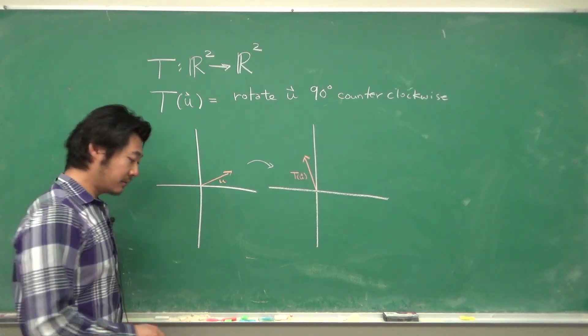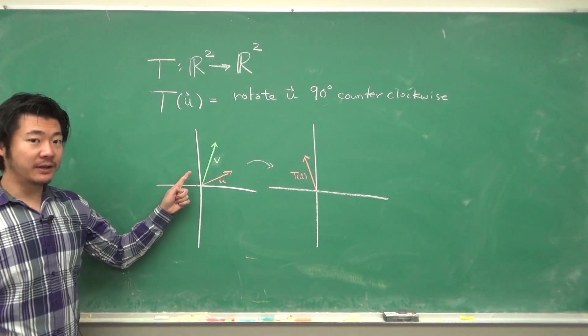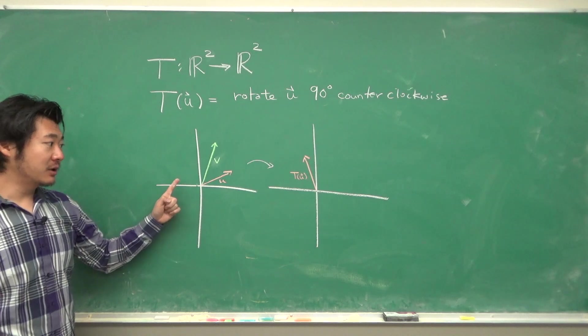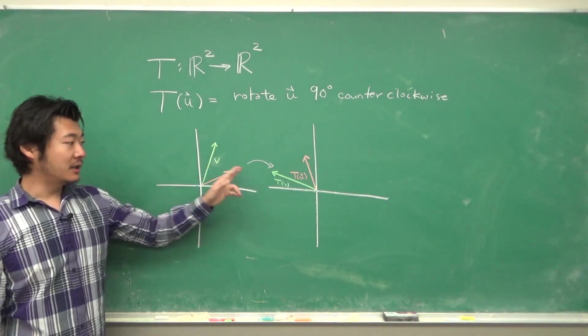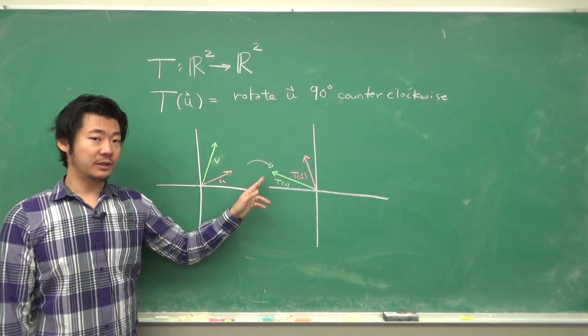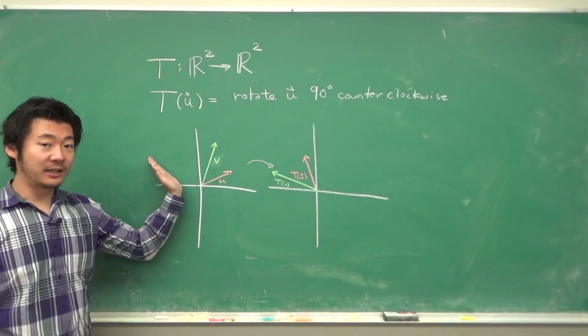To check that this is linear, if we have another vector v, then under this transformation, T will map v to T(v), which is this vector rotated 90 degrees.